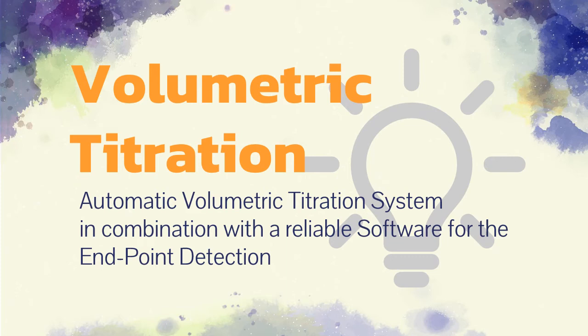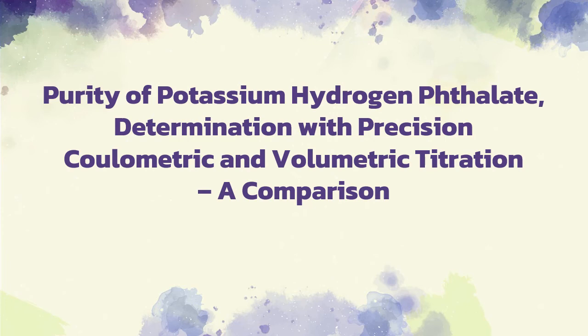To overcome these problems, a special experimental design should be developed to carry out certification analysis of large batches of KHP standards. One proposal is to use a commercially available automatic volumetric titration system in combination with a reliable software for the endpoint detection. With this, it should be possible to produce equivalent results with the same accuracy in comparison to a definite method handled by a fundamental apparatus for traceable precision coulometry. This idea was further explored in this study entitled, Purity of potassium hydrogen phthalate: Determination with precision coulometric and volumetric titration, A Comparison. It was done by Rechnagle et al., and published in the journal Analytica Chimica Acta in 2007.